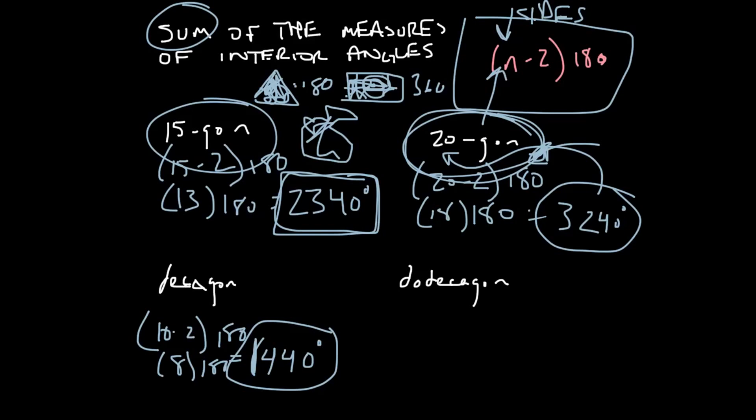Okay, then dodeca-gon. A lot of people don't know, but there's do, that's the prefix for 2. Deca-gon is 10. 2 and 10 is 12. So we do 12 minus 2 times 180. And then 12 minus 2 is 10. And then 10 times 180 is 1,800.